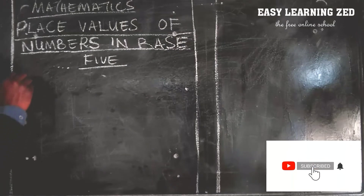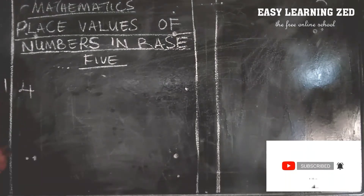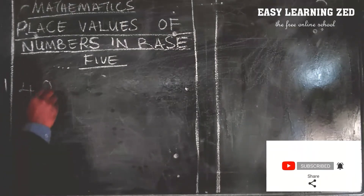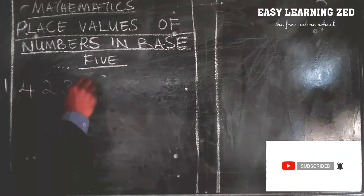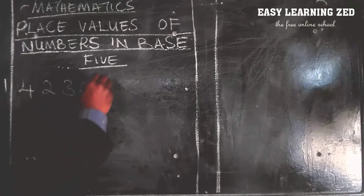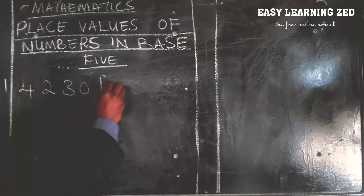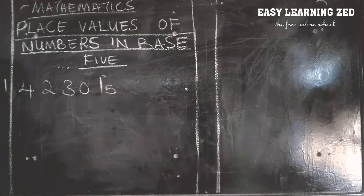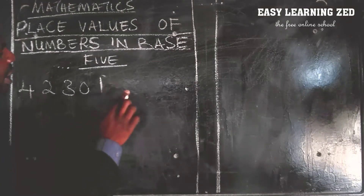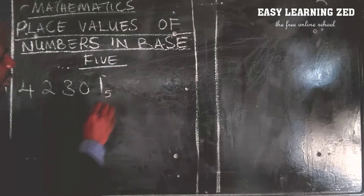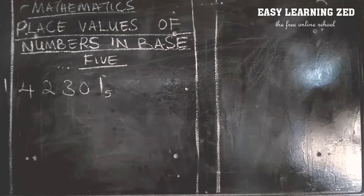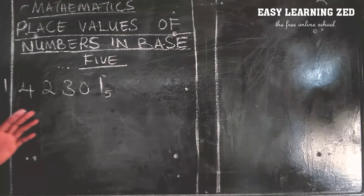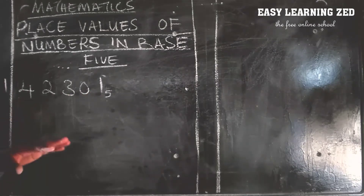I have this number: four two three zero one. It is in base five — I'll put the small five there. That small five shows this number is in base five. So what is the place value of one in base five? What is the place value of four in base five? What is the place value of three in base five?